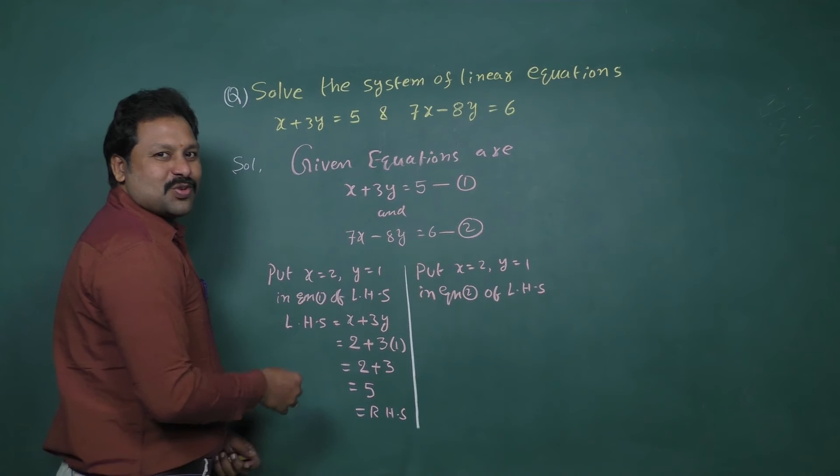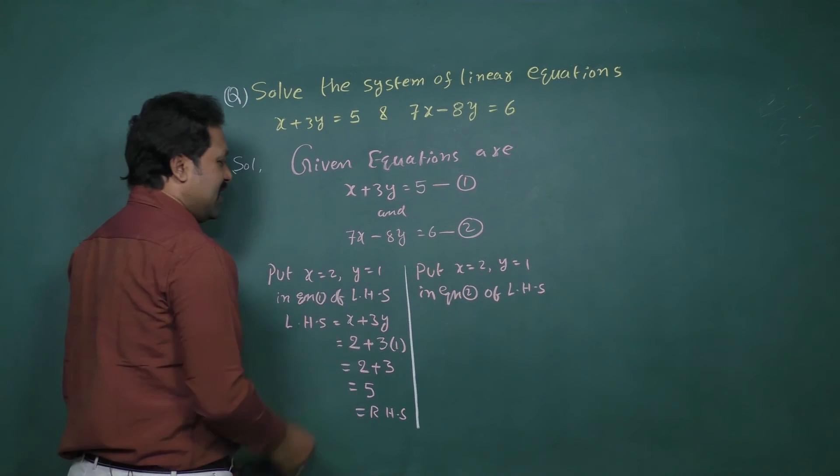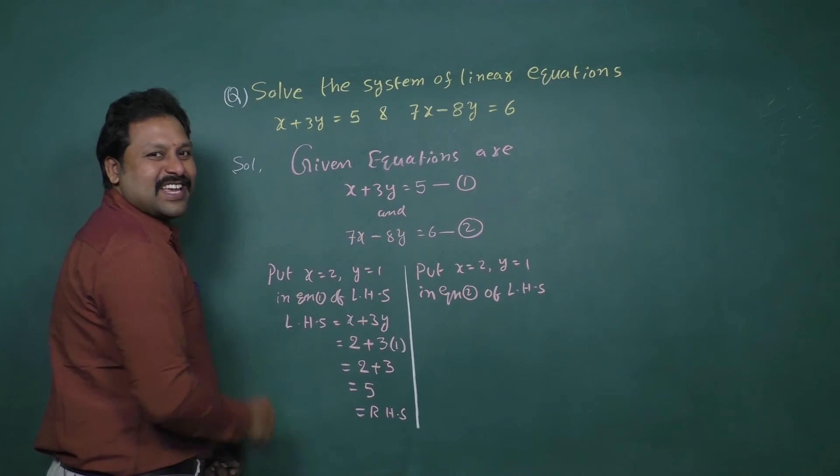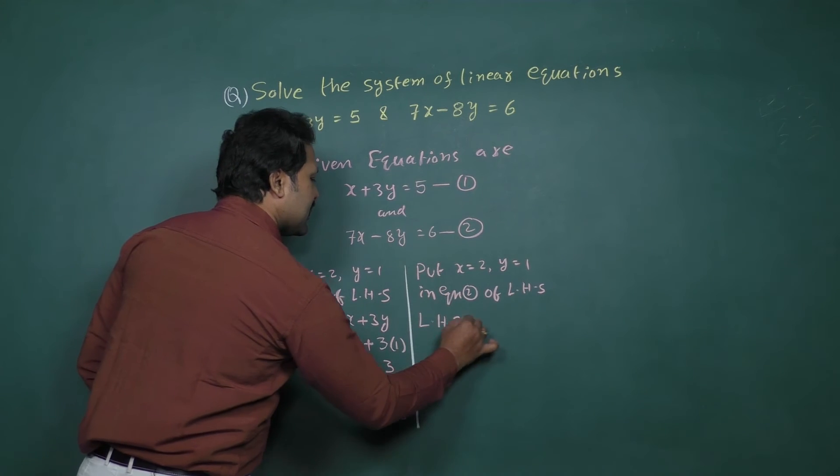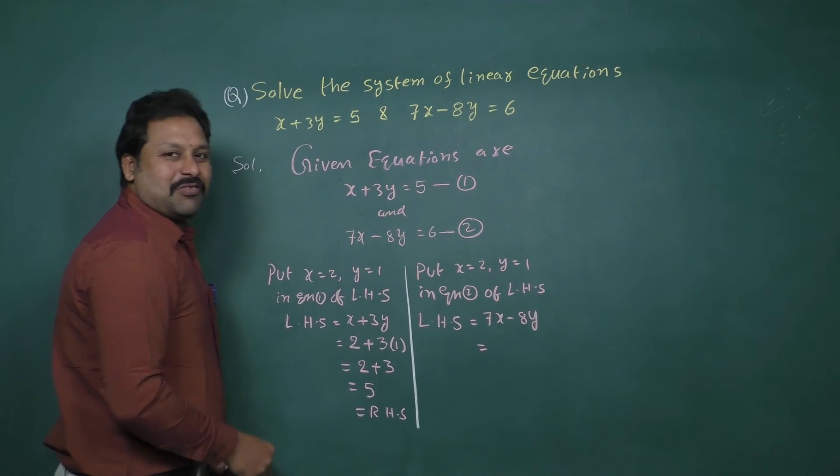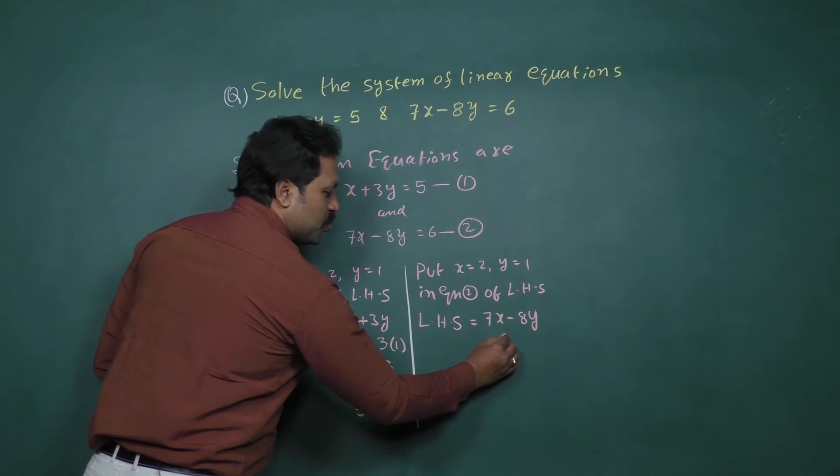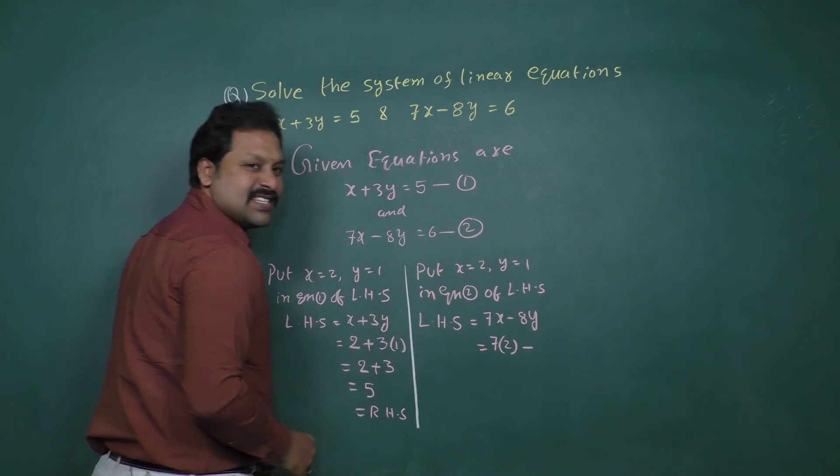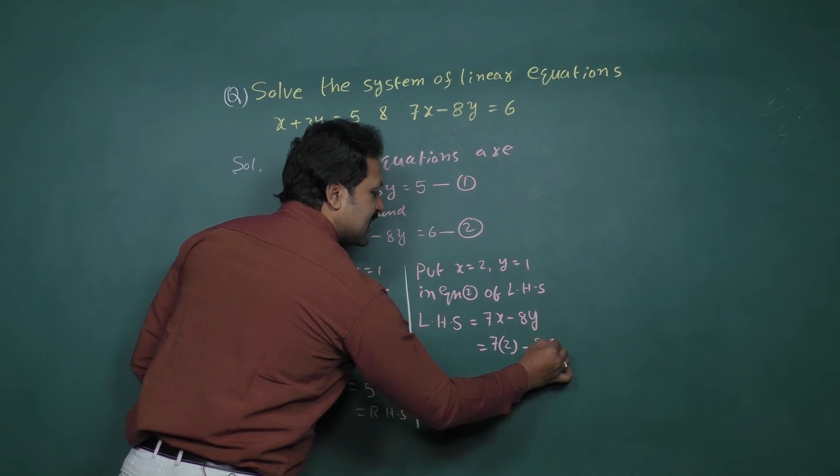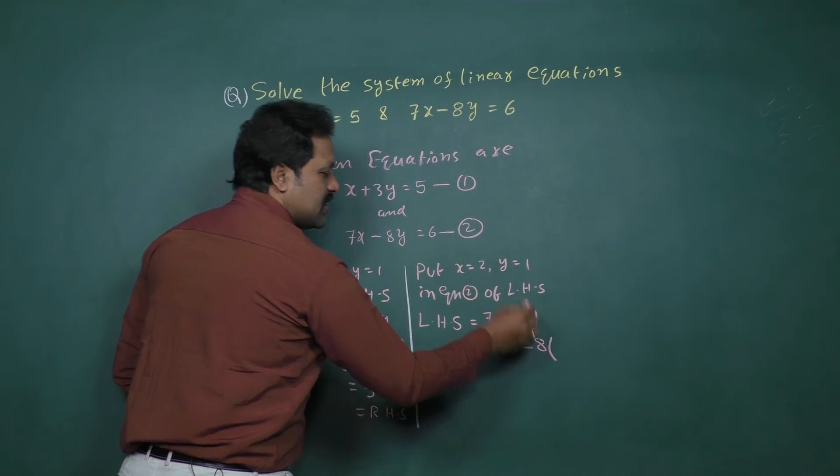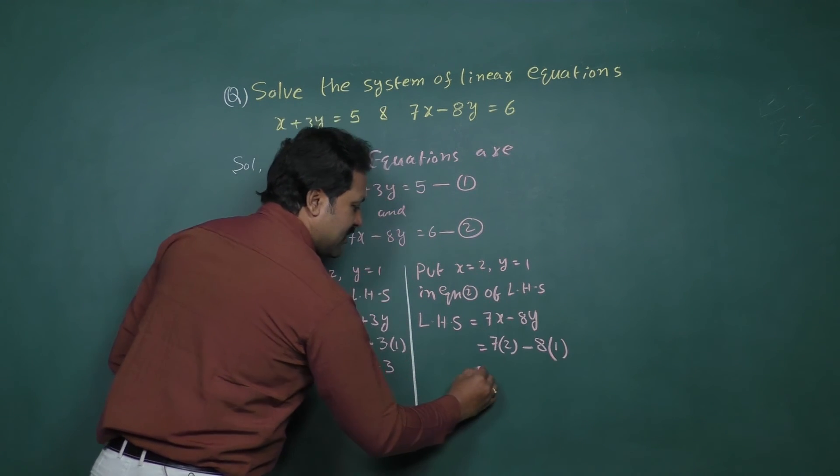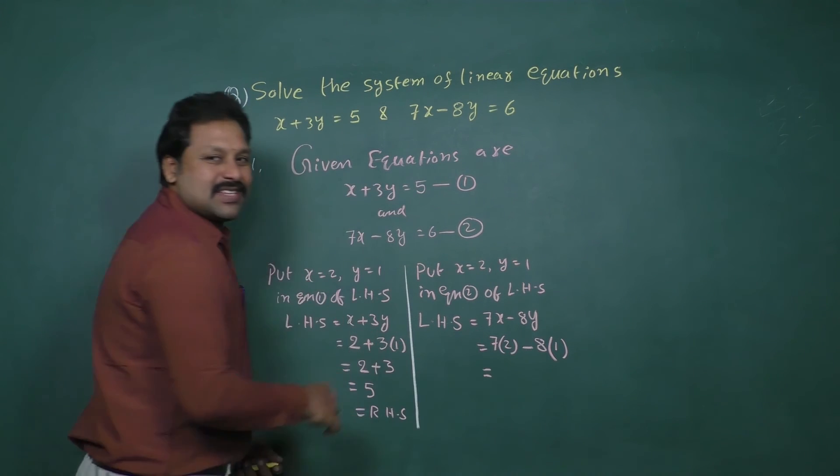So LHS is here: 7x minus 8y equal to 7, x value is 2 minus 8, y value is 1 equal to 7.